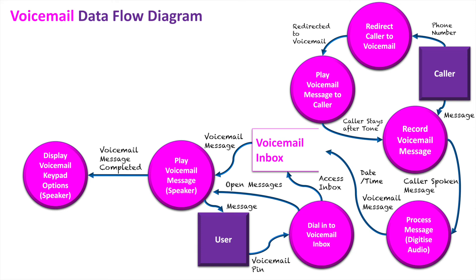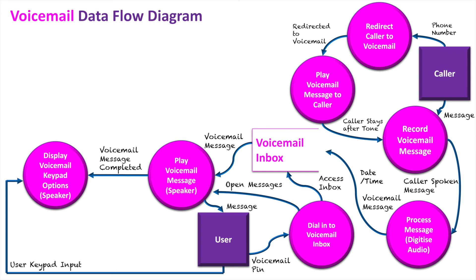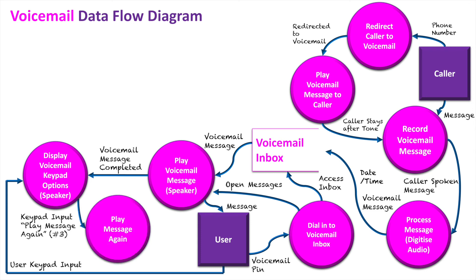So the voicemail message is completed, it displays the voicemail keypad options, and this is said back to the user. They hear that through their speaker, and then the user can use the keypad to input commands at this stage. The first option could be they want to hear the message again — it might have been noisy, they didn't hear the message correctly — so they press 3 on the keypad, they hear the message again, and it just plays the same voicemail message exactly the same again. That step just essentially repeats — they're repeating the message.